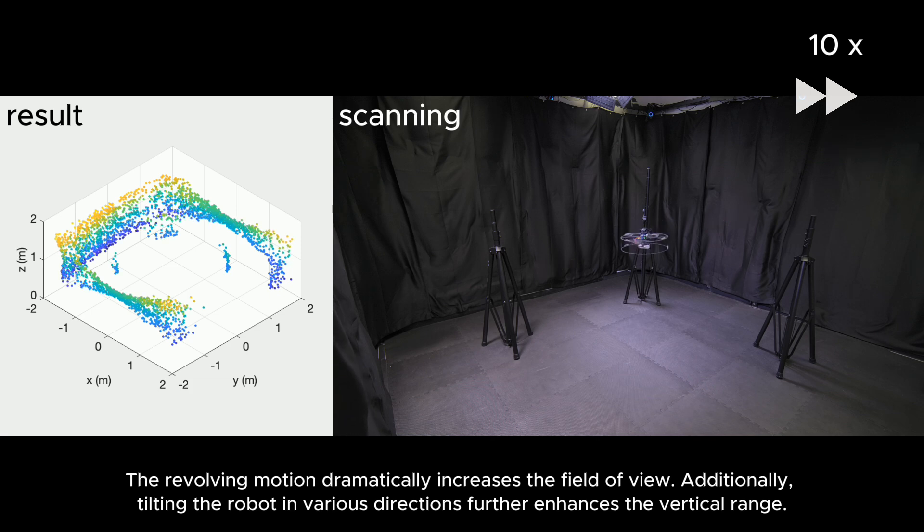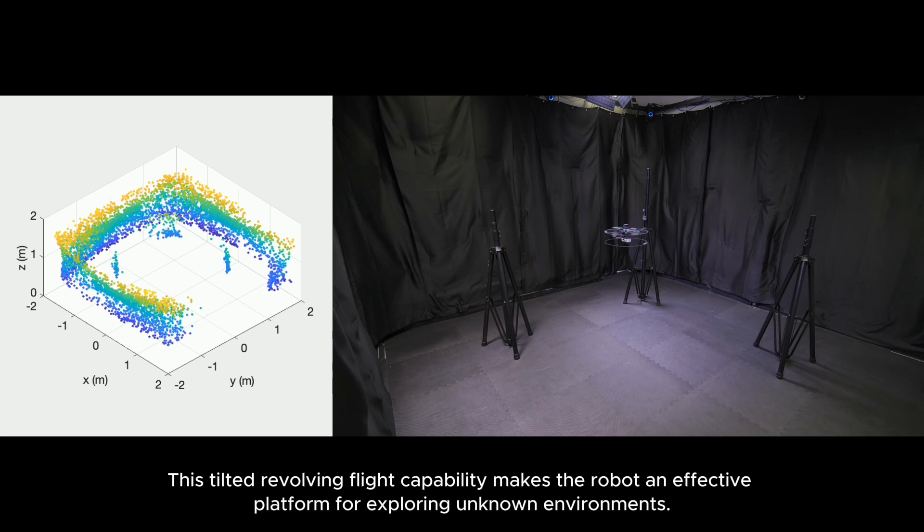Additionally, tilting the robot in various directions further enhances the vertical range. This tilted revolving flight capability makes the robot an effective platform for exploring unknown environments.